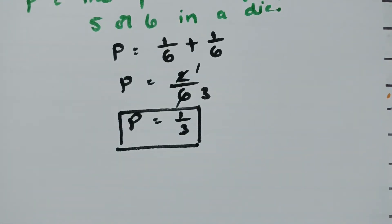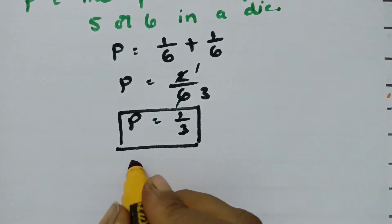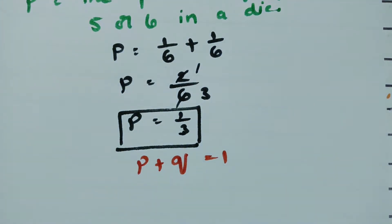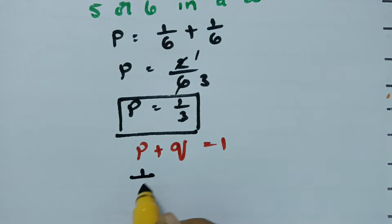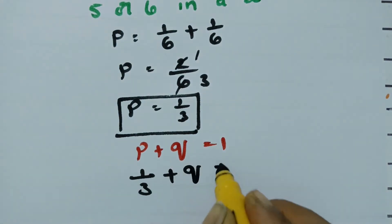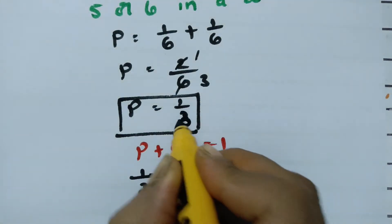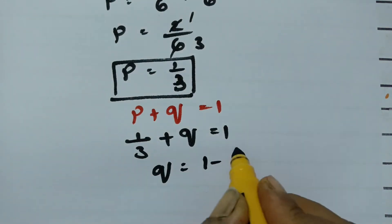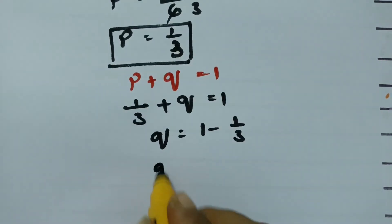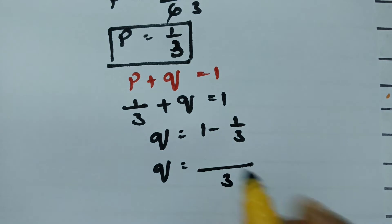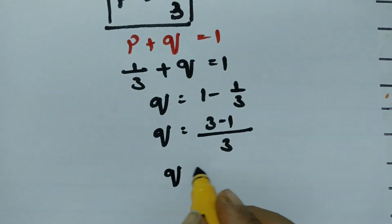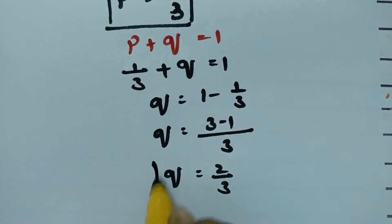The total probability is always equal to unity, that is P plus Q is always equal to 1. Since P is equal to 1 by 3, we have 1 by 3 plus Q equals 1. Therefore Q is equal to 1 minus 1 by 3, which gives Q equal to 2 by 3.